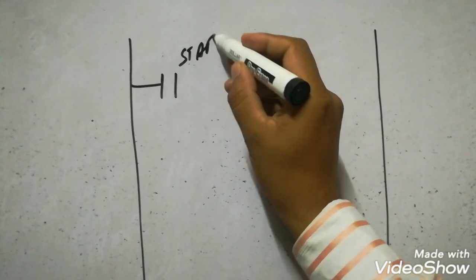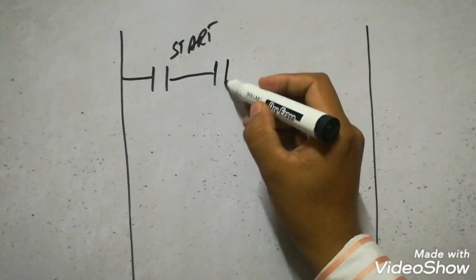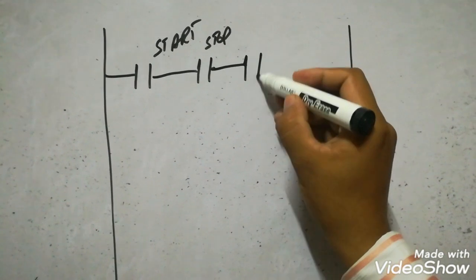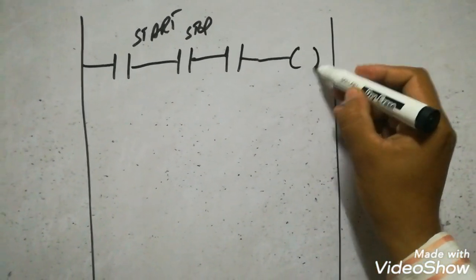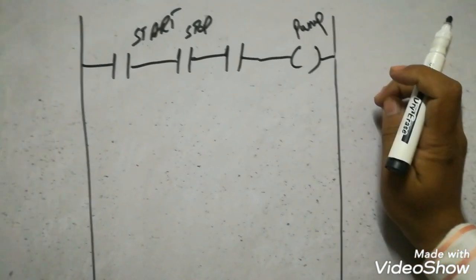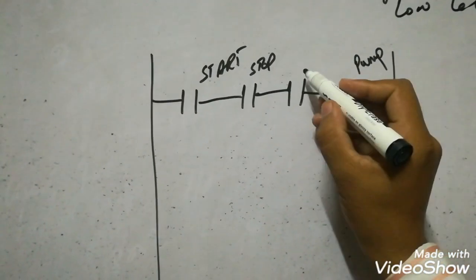Here we start, this is start button to start it manually first. In case of emergency we can stop it. This is emergency stop and then this is the output of the contactor.